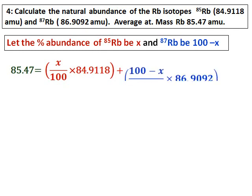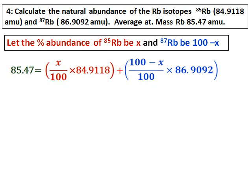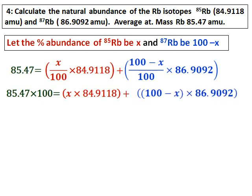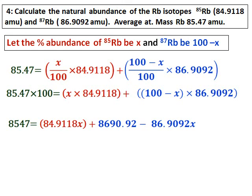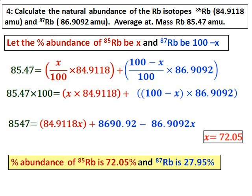With percentage abundances of x and (100 − x), substitute them into the standard equation and solve for x. Be careful while solving: to remove the 100 from the right-hand side, multiply the whole equation by 100 so it moves to the left and simplifies the right side. Also, note that 86.9092 is outside the parenthesis of (100 − x) — this is a common mistake. Calculating gives x = 72.05, so rubidium-85 is 72.05% and rubidium-87 is 27.95%.